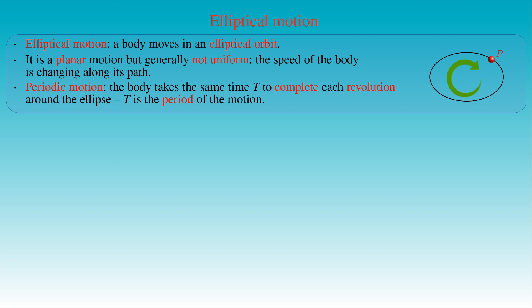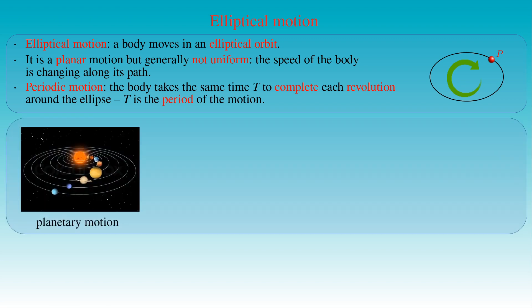Let us consider some examples for elliptical motion. The most famous example for such a type of motion is planetary motion. The orbits of the planets of our solar system around the sun are elliptical, and the sun sits at one of the foci of the elliptic planetary orbits.